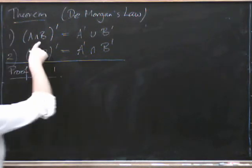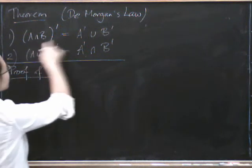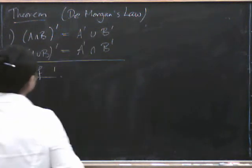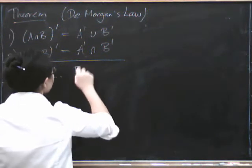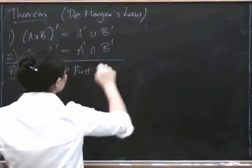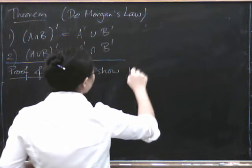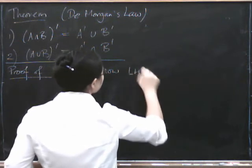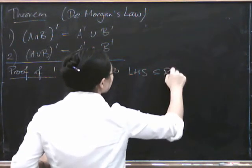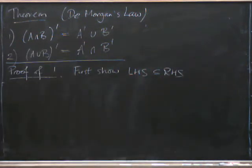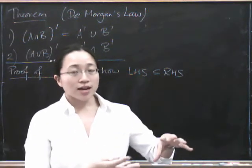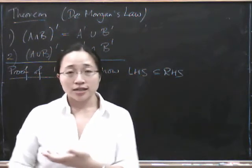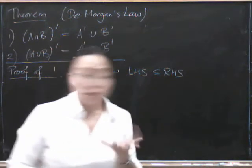So we've got to show, first of all, that this set is completely contained within that one. So we want to show, first, that the left-hand side is completely contained within the right-hand side. Remember when we're showing that a set is equal to another set, first we show the left-hand side is contained in the right-hand side, and then the right-hand side is contained in the left-hand side. That's one way of doing it anyway.